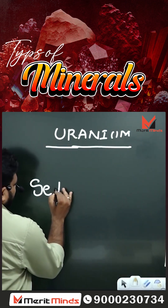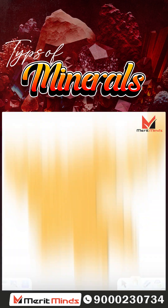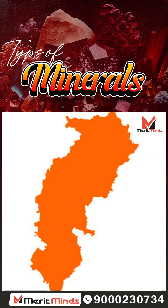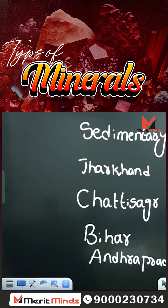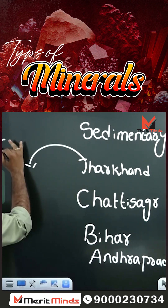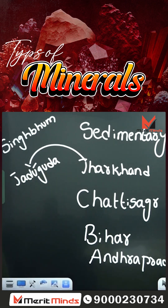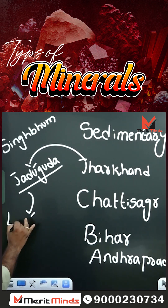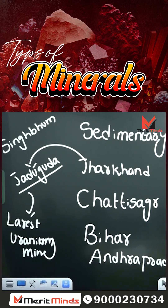Uranium is available in sedimentary rocks in the states of Jharkhand, Chhattisgarh, Bihar, and Andhra Pradesh. Within Jharkhand, there are places called Singhbhum and Jaduguda. Jaduguda is considered the largest uranium mine in India.